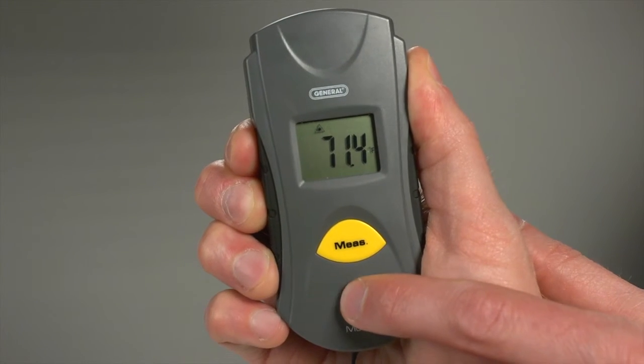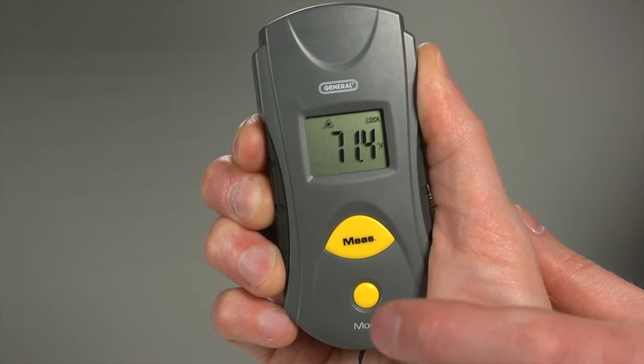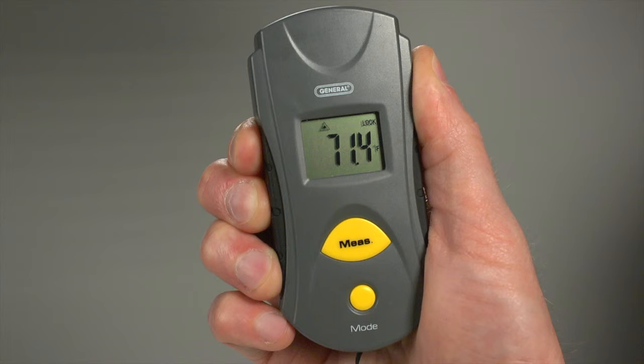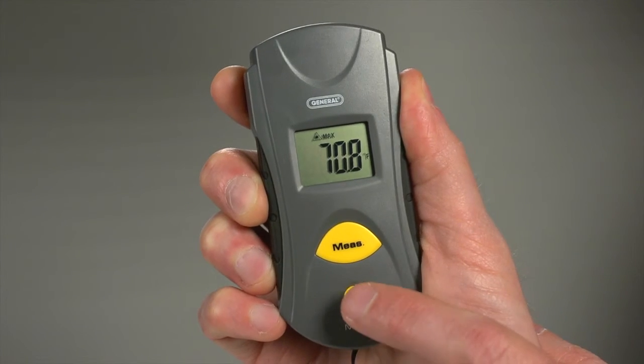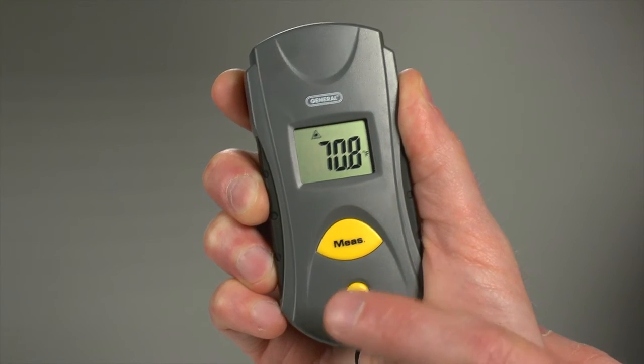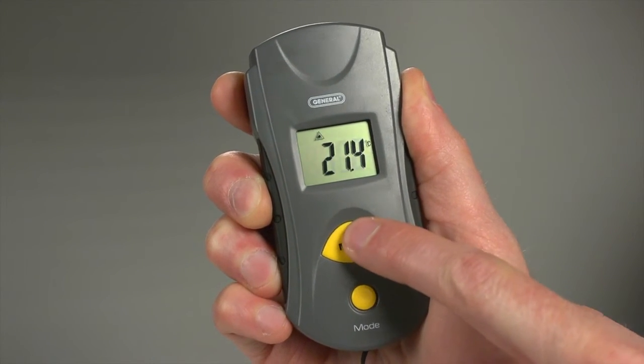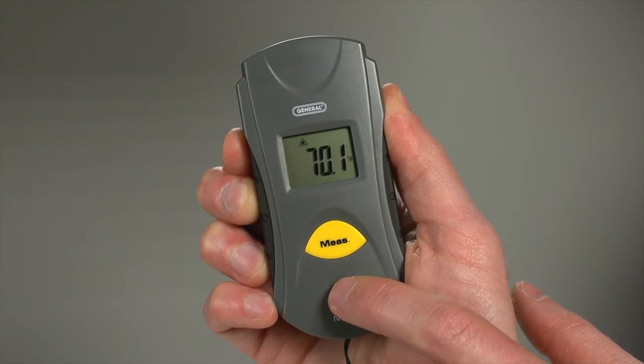Press three times for lock. Now your measurement feature stays on without holding measure, displaying temperatures with the laser pointer off. Press four times for CF mode. Now press measure to switch between Fahrenheit and Celsius. Press five times for emissivity mode.